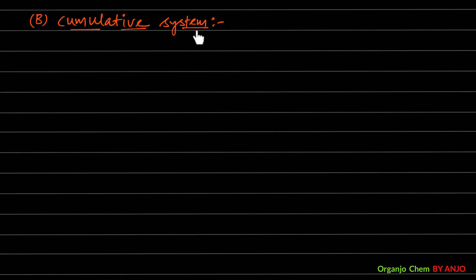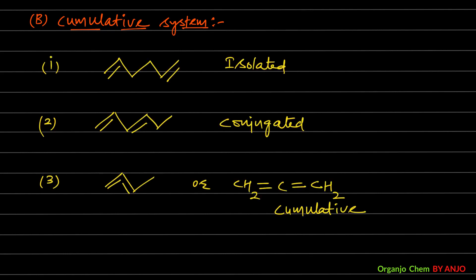Now we talk about the cumulative system. The basic question is: what is a cumulative system? Based on the position of double bonds, three types of systems exist: (1) Isolated system — two double bonds separated by more than one single bond; (2) Conjugated system — two double bonds separated by exactly one single bond; (3) Cumulative system — both double bonds on the same carbon, one on each side. Today we will discuss how geometrical isomerism occurs in cumulative systems.